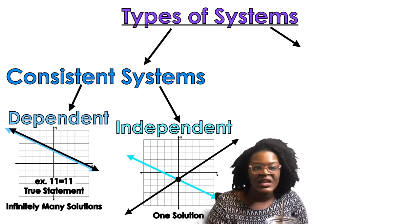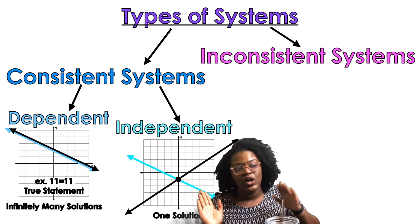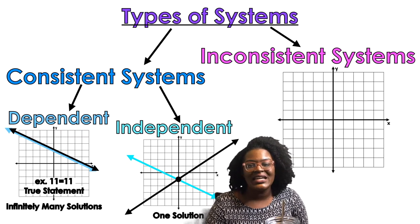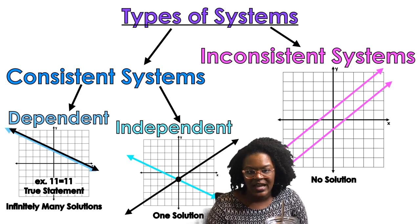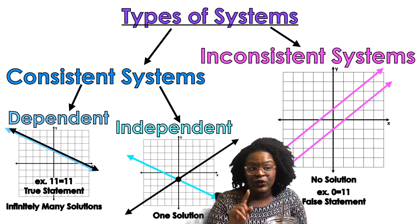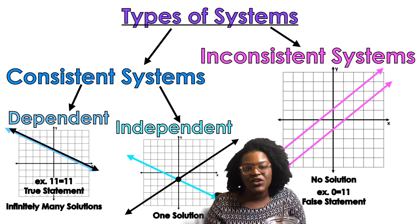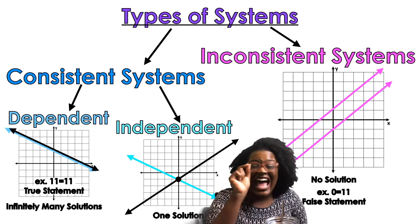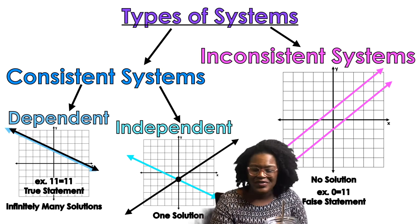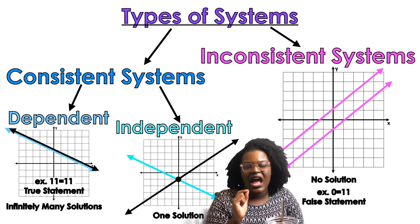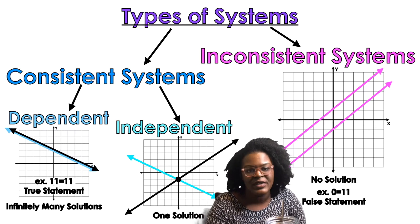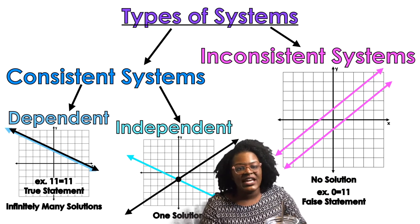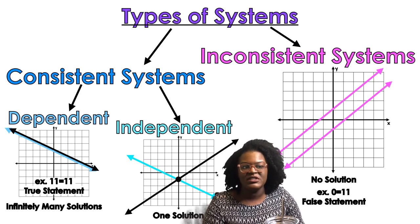The second type of system is an inconsistent system. Inconsistent systems are when you have no solution. On a graph, you look for two parallel lines — lines that are never going to touch. If you're solving by hand and you get a statement that is not true, like 0 equals 11 or 15 equals 12, that is an inconsistent system. We're not talking about dependent or independent — just inconsistent. If it is consistent, then you classify it as dependent or independent.